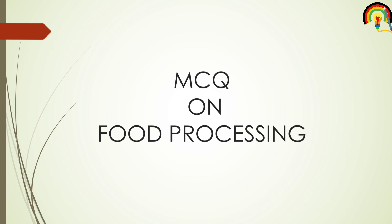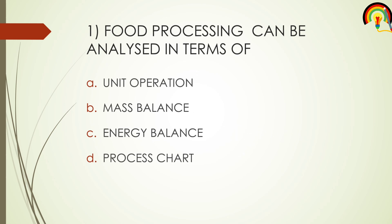The first question: food processing can be analyzed in terms of — option A: unit operation, option B: mass balance, option C: energy balance, and option D: process chart. The answer for the question 'food processing can be analyzed in terms of' is unit operation.